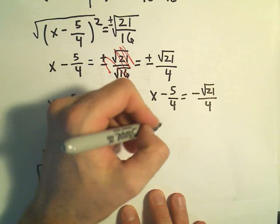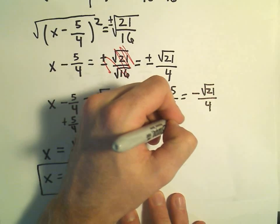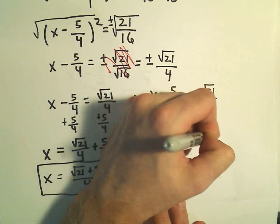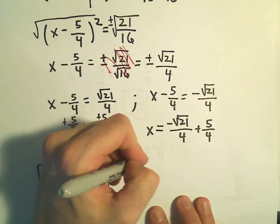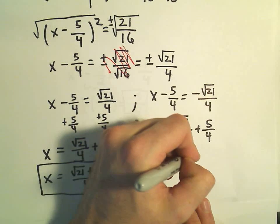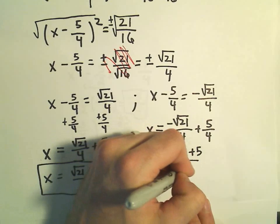And the other, if we add 5/4, we'll get x = -√21/4 + 5/4. But again, if you want to, you could write this as a single fraction. -√21 + 5 over 4. And that would be your other solution.